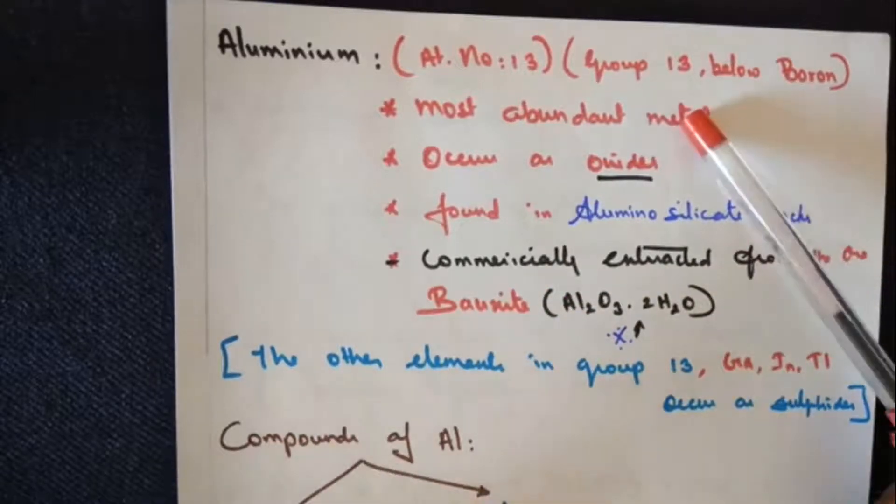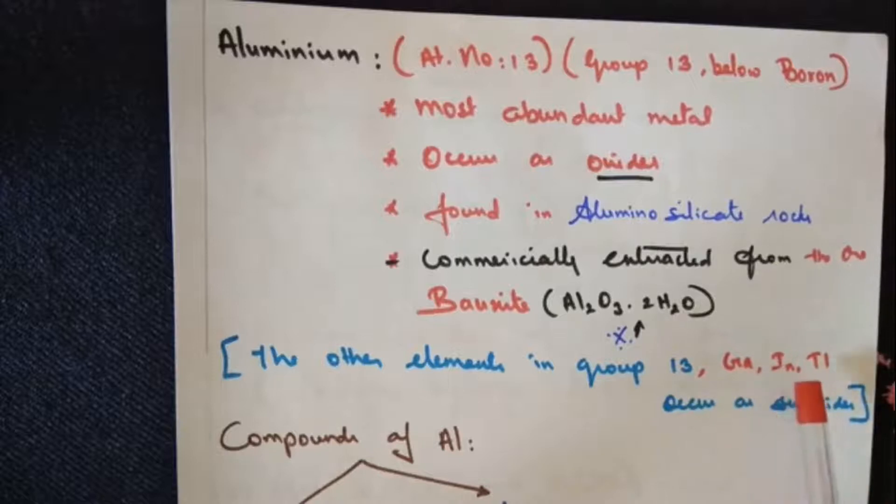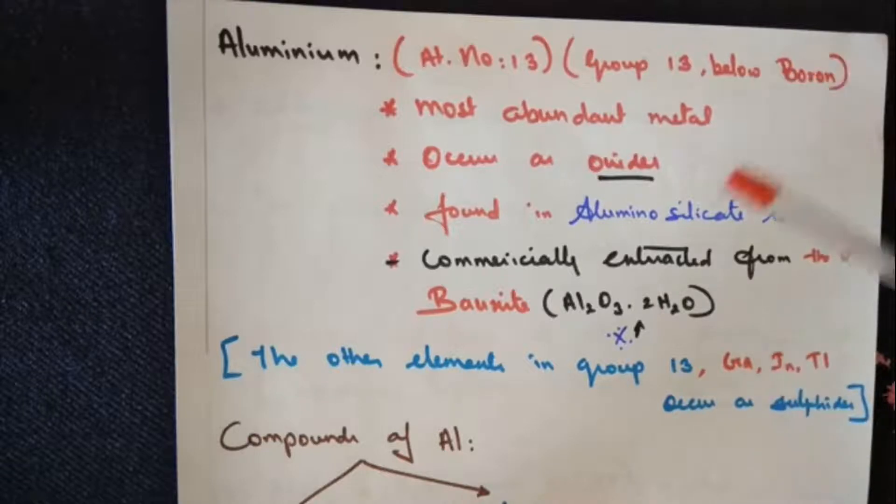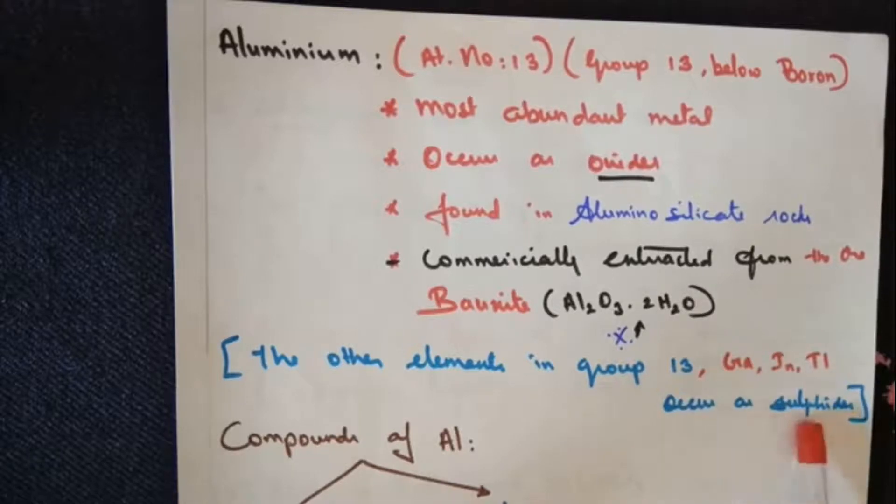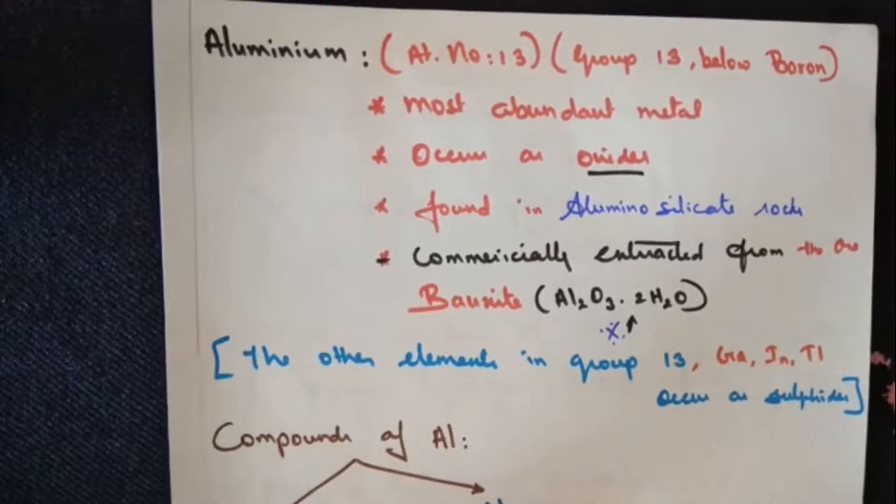The other elements in group number 13 are gallium, indium, and thallium. They occur as sulphides because compared to the occurrence of boron and aluminium, these are found only in small traces. Mostly they are in the form of sulphide ores.